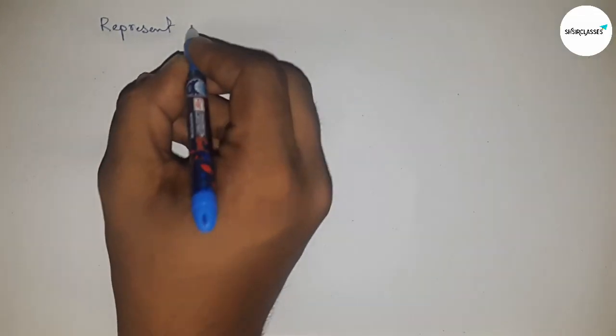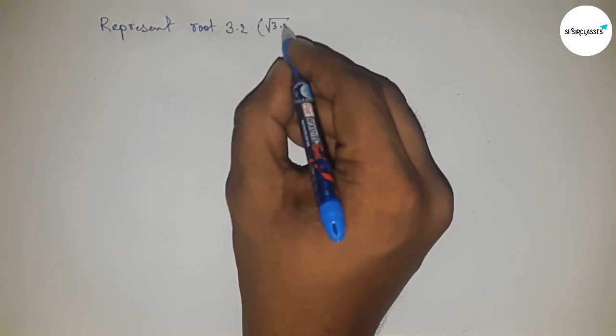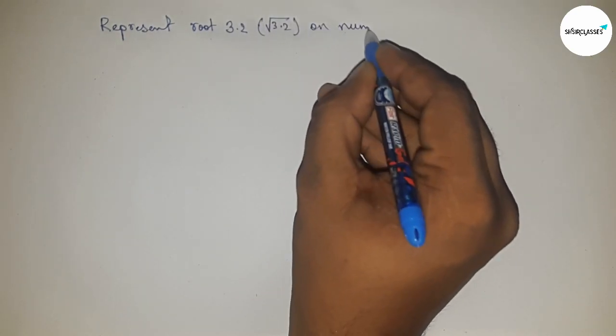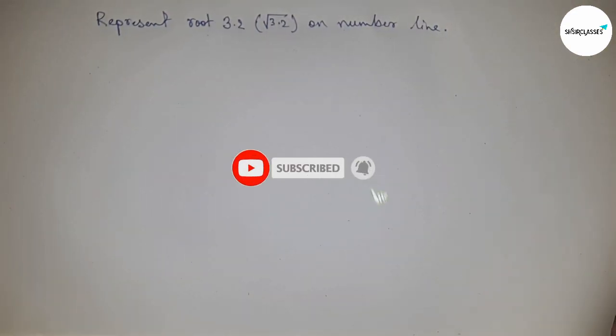Hi everyone, welcome to SSJ Classes. Today we're talking about the representation of root 3.2 on a number line. Before starting the video, please subscribe to the channel and press the bell icon.